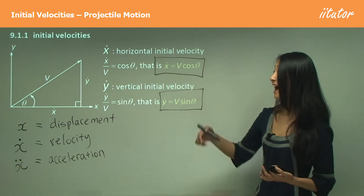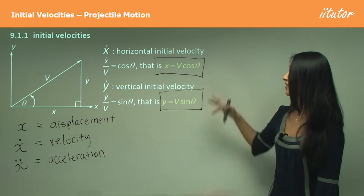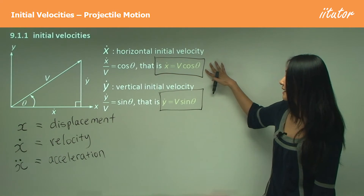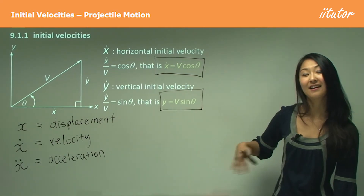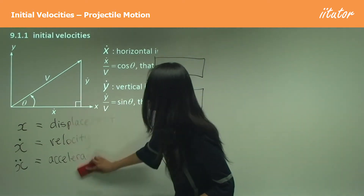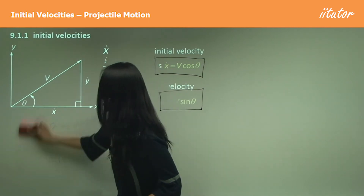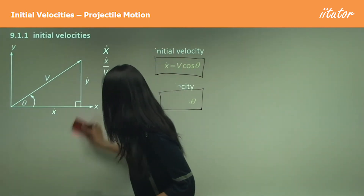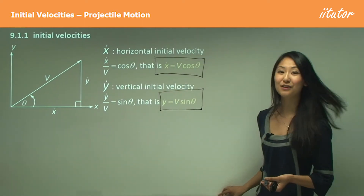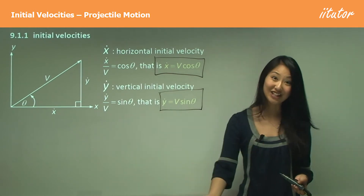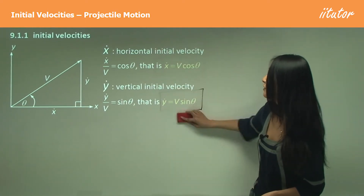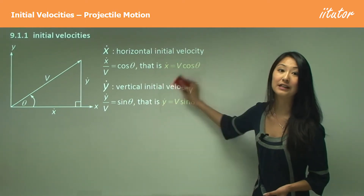You don't have to go through this whole derivation every time — just memorize these equations: x-dot equals v cos theta, and y-dot equals v sine theta. Also make sure you know that these equations are only for working out the initial velocities, right at the very start. They don't tell you the velocity for the whole time, since that's going to change.